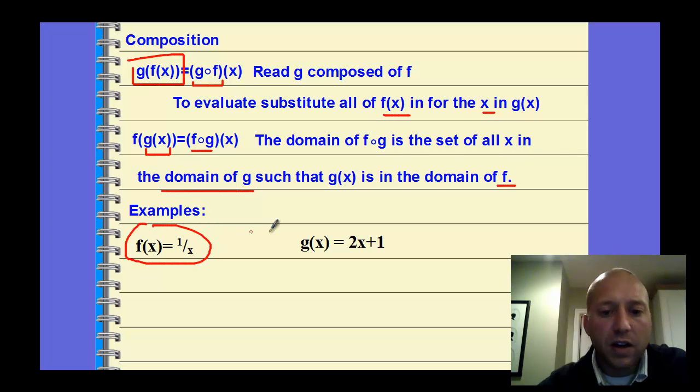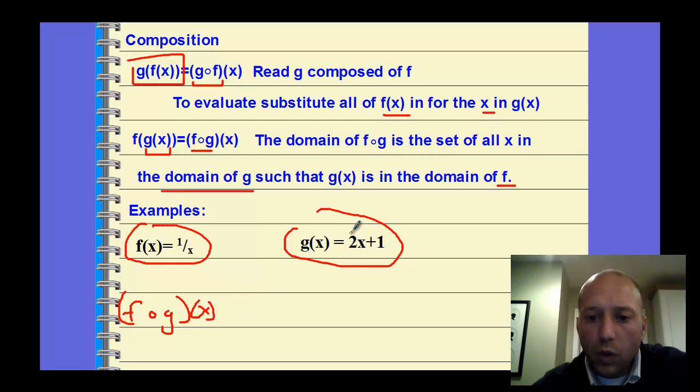Example here: if we're given two functions f(x) and g(x), let's find f composed of g of x. To do this, we want to take the g function, and we want to put it in place of the x in the other function. So when we write this, it's going to be 1 over, instead of writing x, we're going to replace it with all of g.